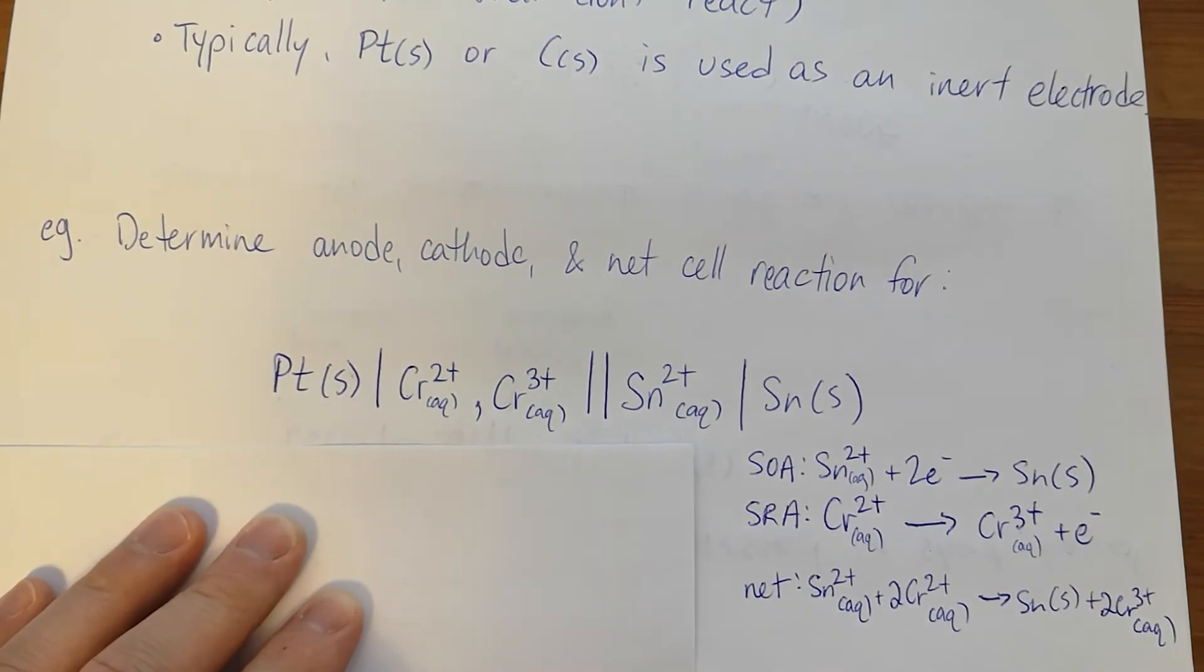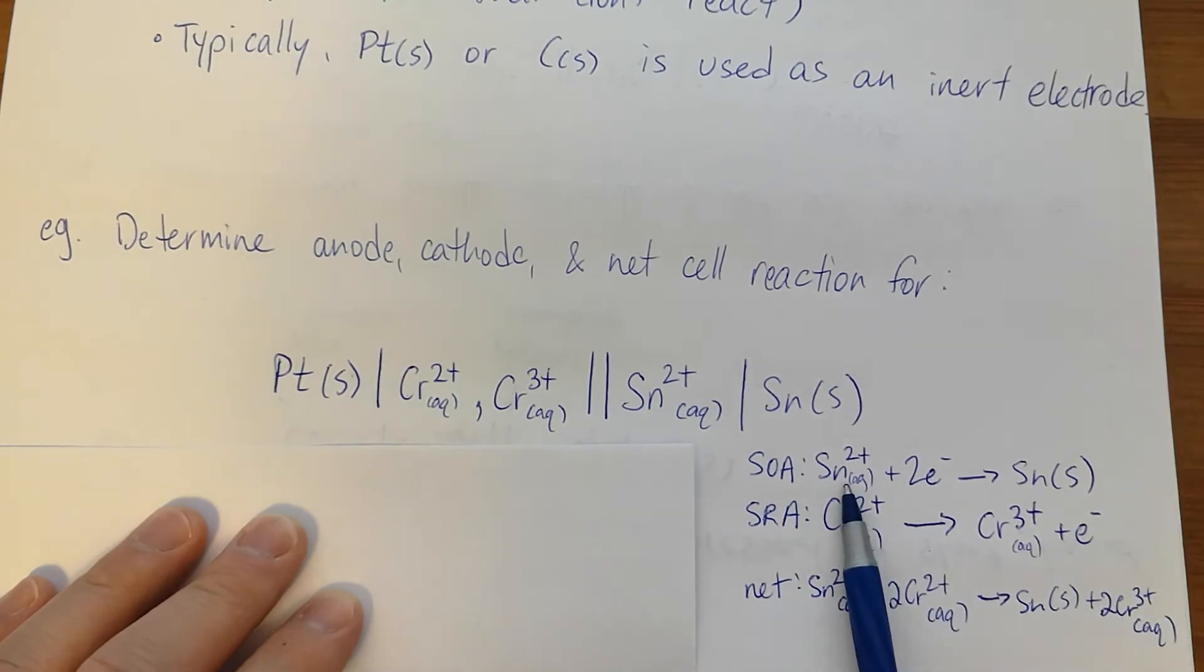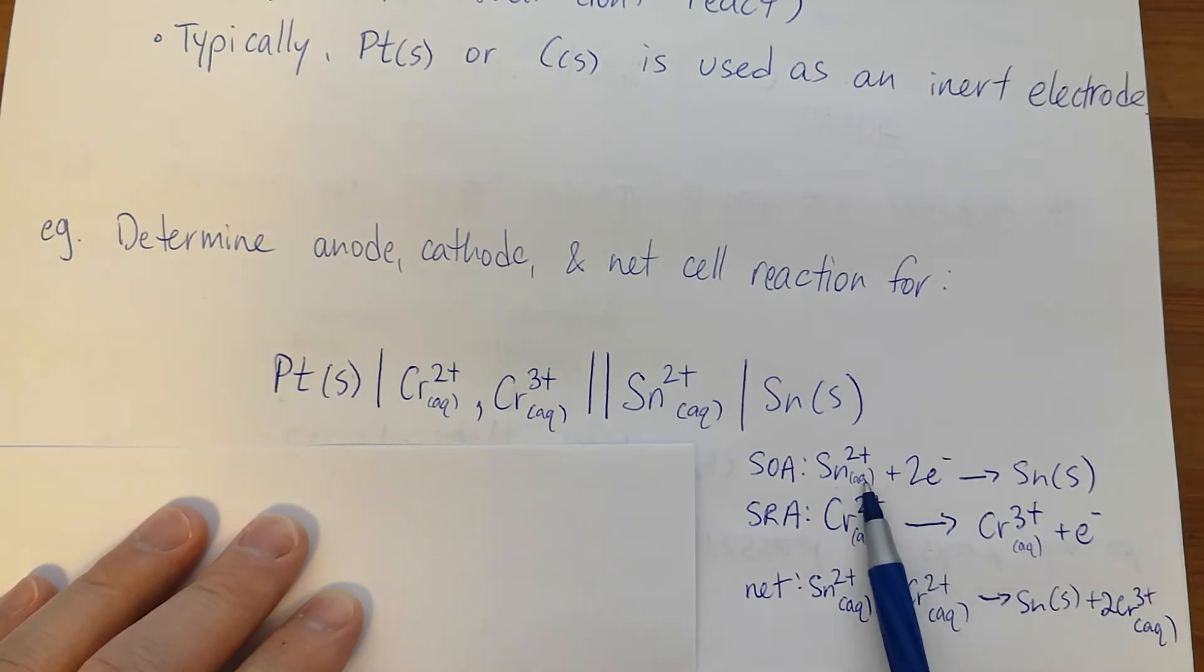Okay, now let's identify the anode and the cathode. So the SOA was tin 2, it gained electrons, that's reduction. At the farm I saw red cat, reduction occurs at the cathode.